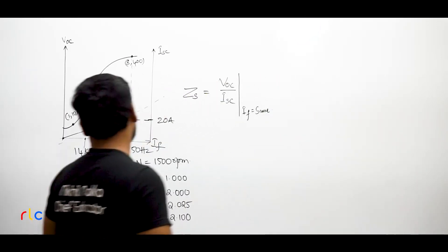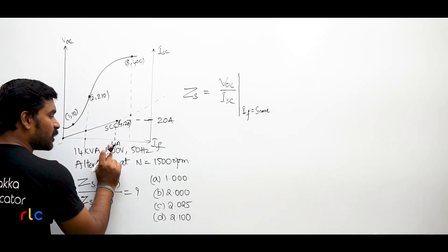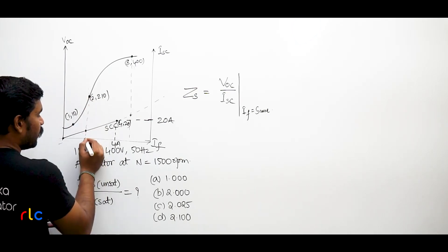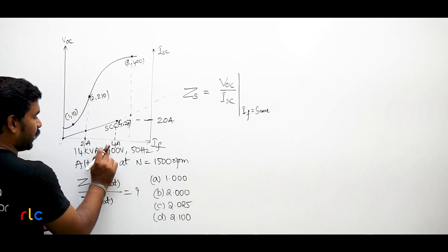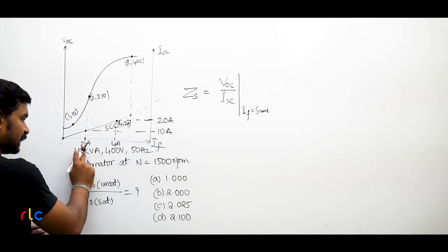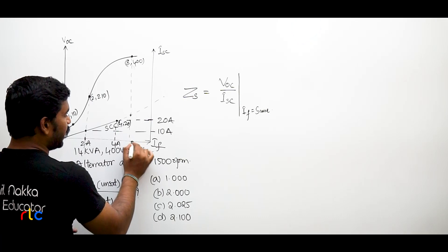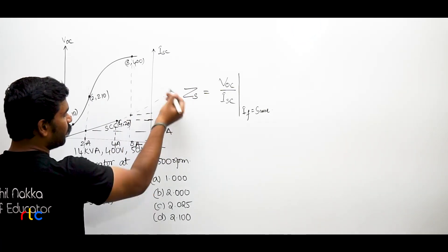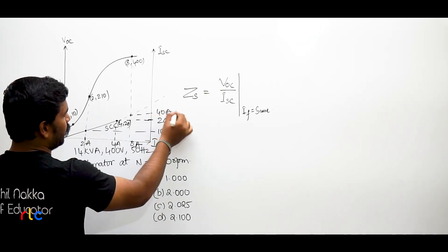That means if for 4 Amperes of field current it is producing 20 Amperes, then what will be the value for 2 Amperes of field current? The value for 2 Amperes would be 10 Amperes. If, let us say, field current is increased to what? 8 Amperes. If field current increased to 8 Amperes, short circuit current will also double, that is 40 Amperes.